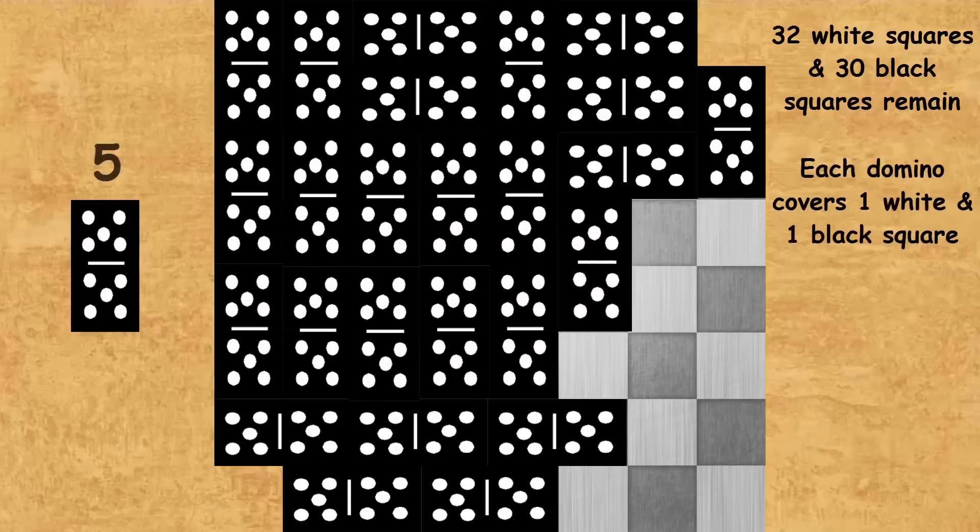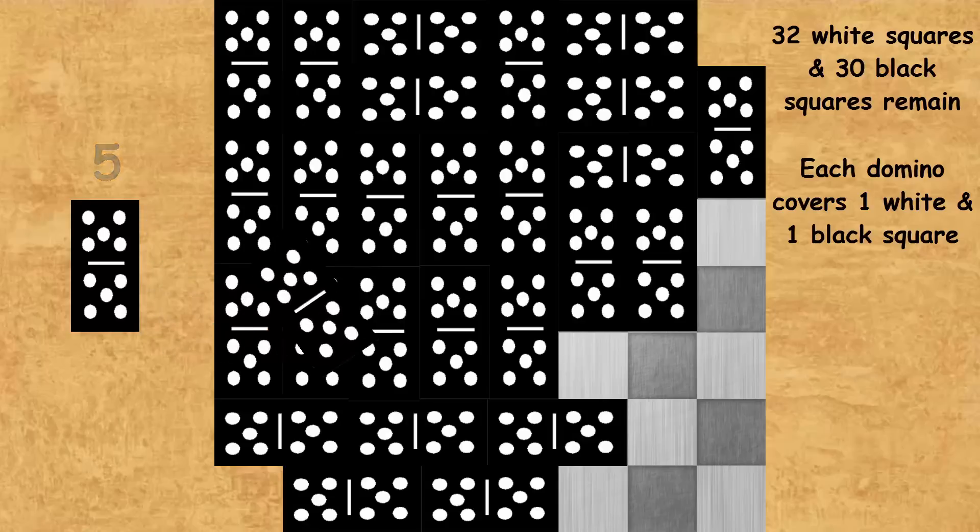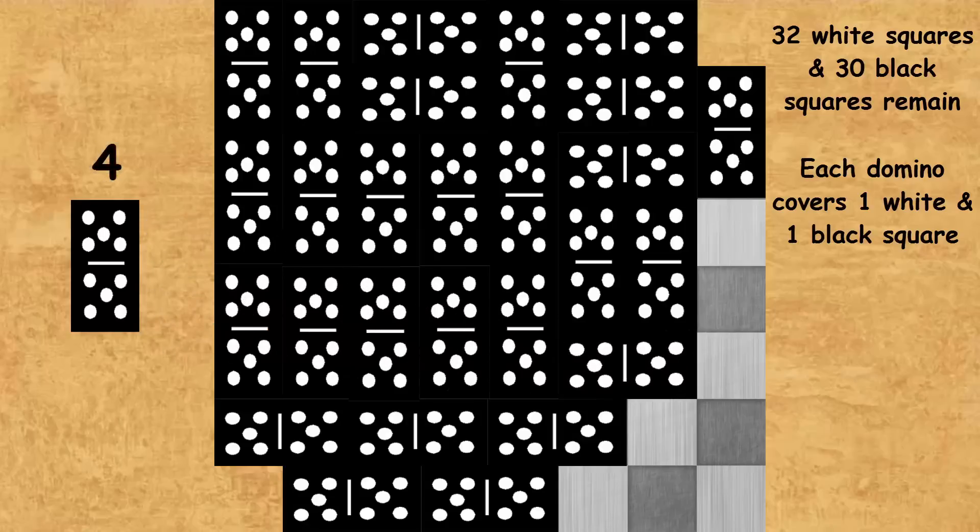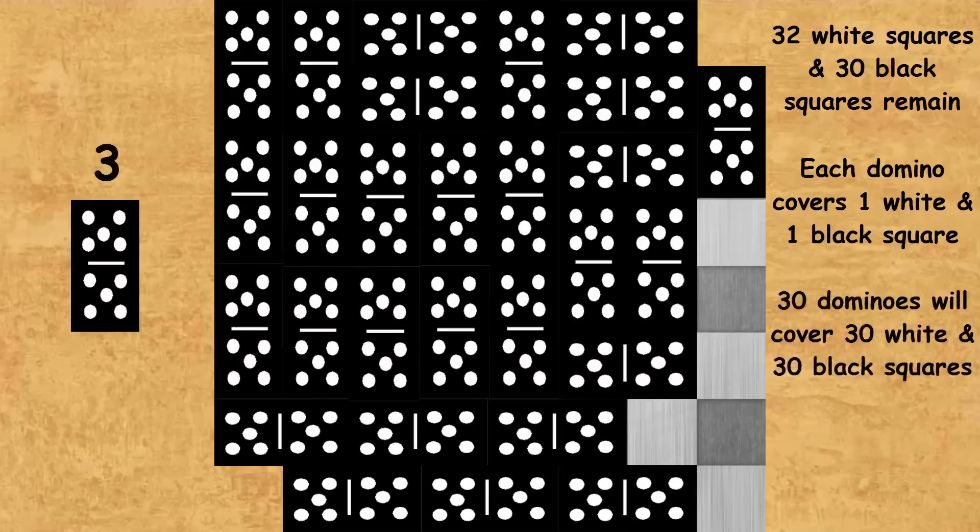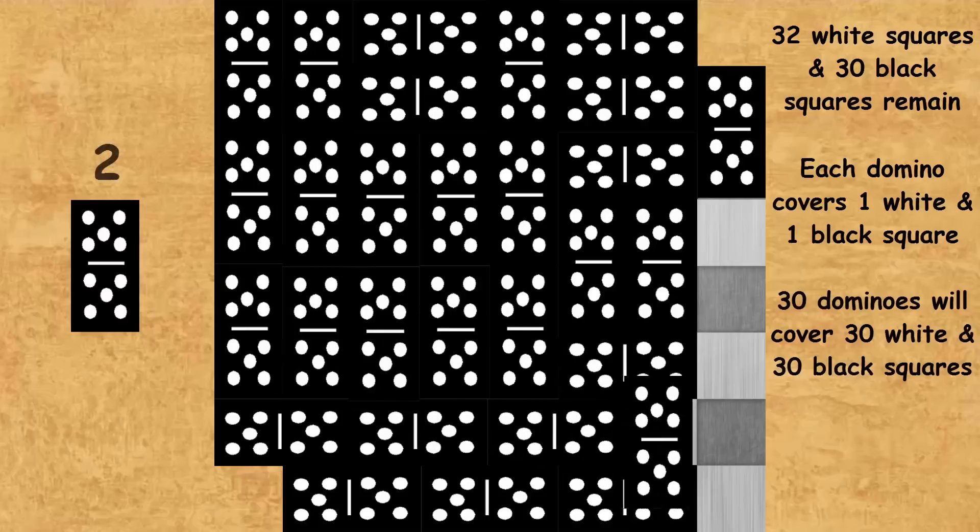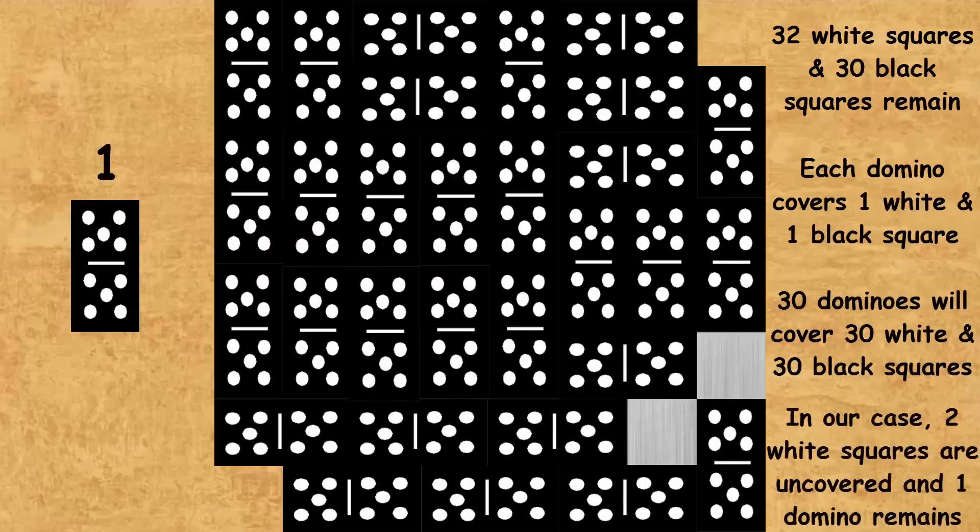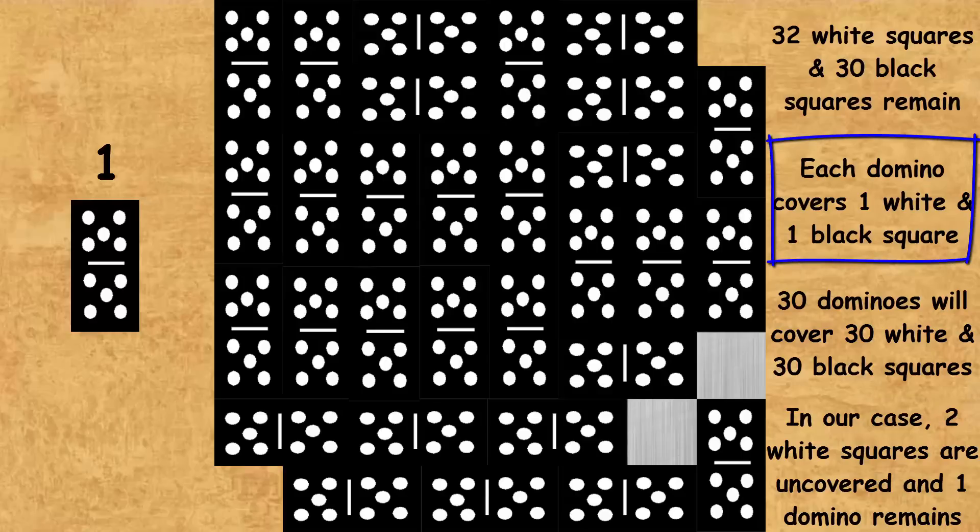And so what this means is that no matter how thirty of the dominoes are arranged exactly thirty white squares and thirty black squares will be covered. Which in our case leaves us with two white squares uncovered and just one domino remaining to be placed. And as we already know one domino needs to cover a white and black. It cannot cover two white, cannot cover two black and so therefore this problem is impossible. It is impossible to cover this mutilated chess board.